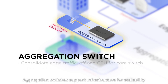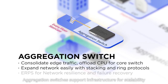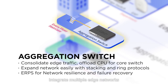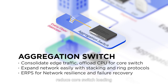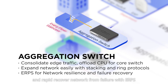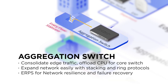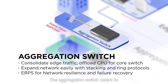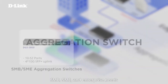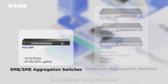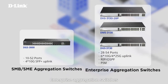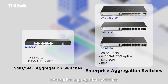Aggregation Switches support infrastructure for scalability, integrate multiple edge networks, reduce Core Switch loading, and rapidly recover from network failure with ERPS. The Aggregation Switch caters to SMB, SME, and Enterprise needs. Enterprise Aggregation Switches offer more high-speed uplink ports.